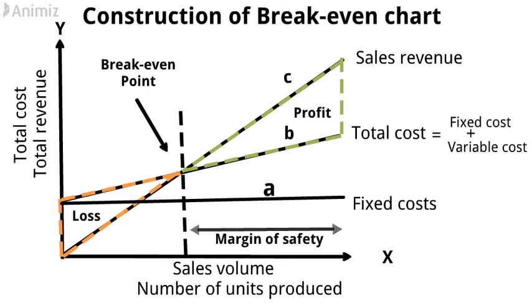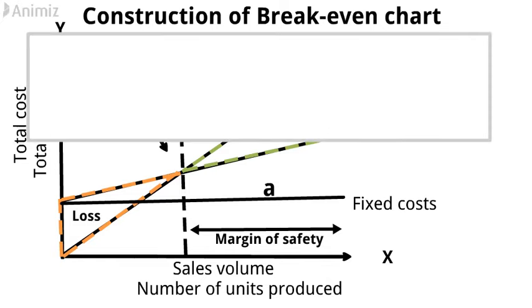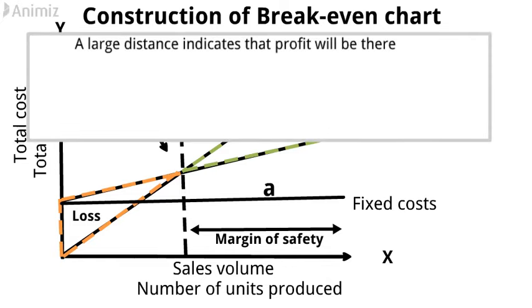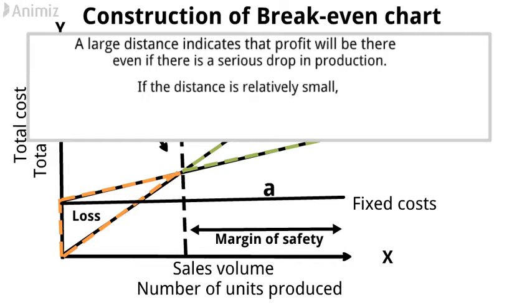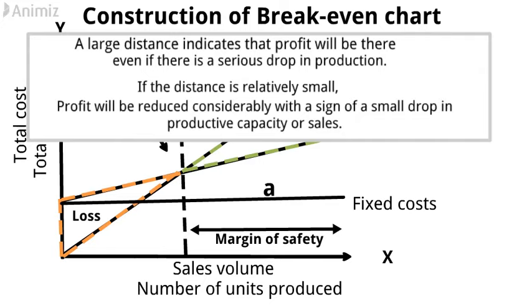The margin of safety is presented on the break-even chart by the distance between the break-even point and the production output. A large distance indicates that profit will be maintained even if there is a serious drop in production. If the distance is relatively small, it indicates profit will be reduced considerably with even a small drop in productive capacity or sales.